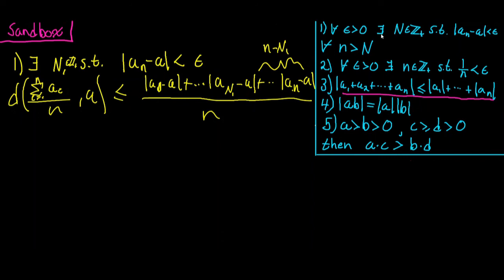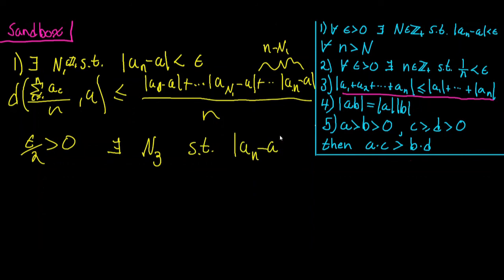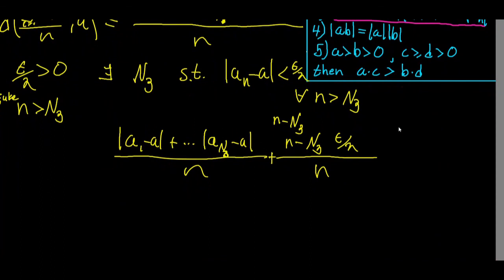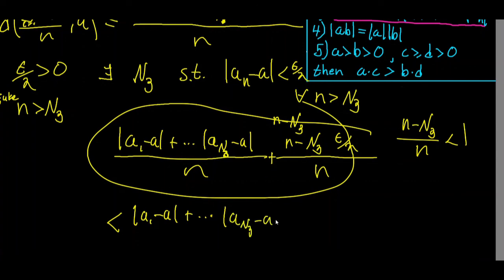If we take n strictly greater than N₃, we can redo the argument: the distance is less than or equal to the absolute value of a₁ minus a plus all the way up to absolute value of a_{N₃} minus a, plus n minus N₃ times epsilon over 2, all over n. Since n minus N₃ over n is strictly less than 1, this whole expression is strictly less than the absolute value of a₁ minus a plus all the way up to absolute value of a_{N₃} minus a, all over n, plus epsilon over 2.